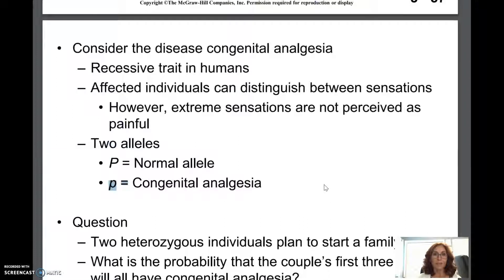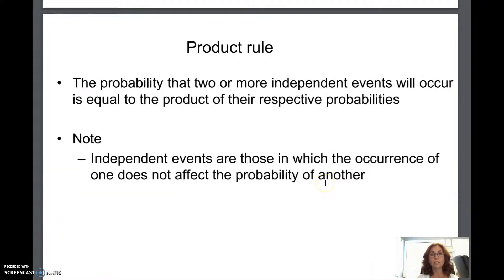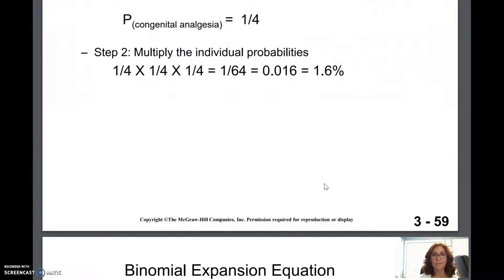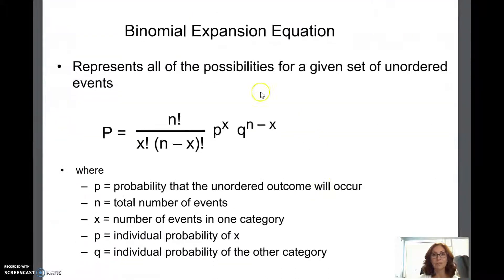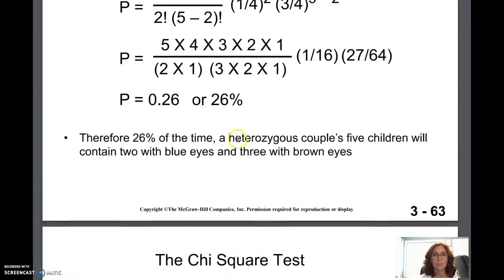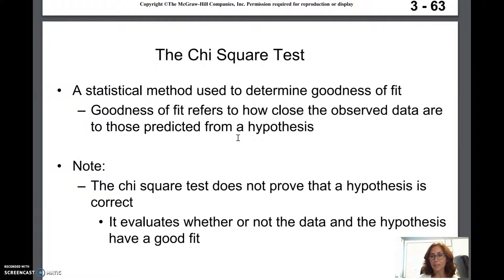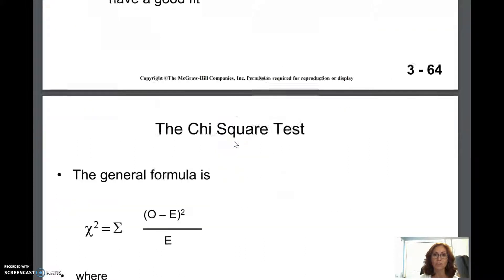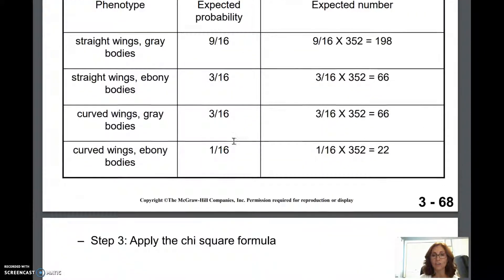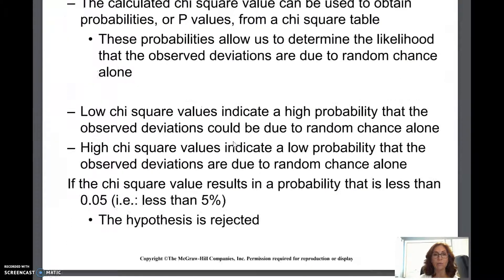The way I think about it: use the sum rule for a dihybrid cross, and the product rule for a monohybrid cross. As for binomial expansion, I'm not going to ask you that on the exam — let's skip that for now. The reason is there's no math prerequisite for this course, so I'm leaving you alone on that part.